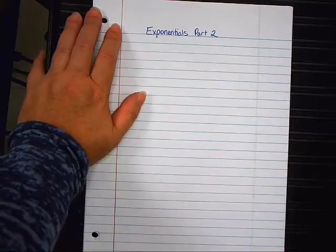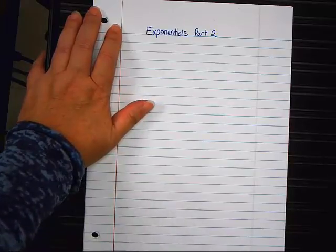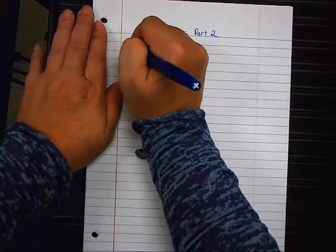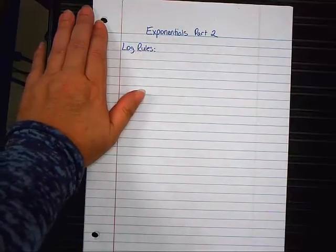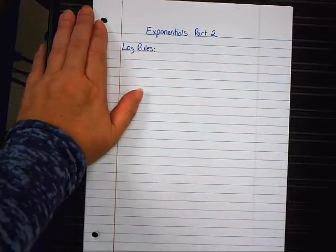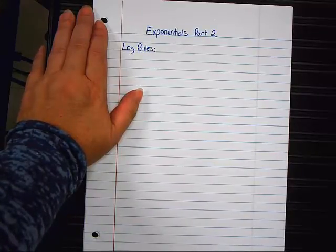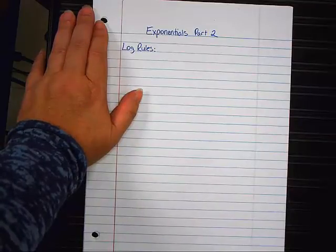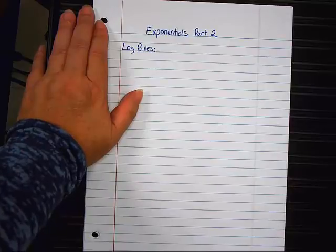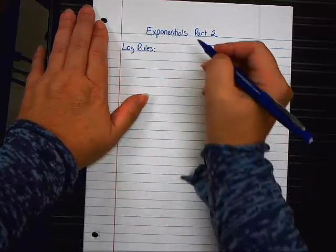But before we start this, we need to do a little bit of review of logarithms, because we're going to need it. Now, in calculus, I told you that we don't use degrees at all. We only use radians. In calculus, also, very rarely do we use common logs. We always use natural logs, ln's. So, when I write these log rules, I'm going to write them in terms of ln instead of in log form.